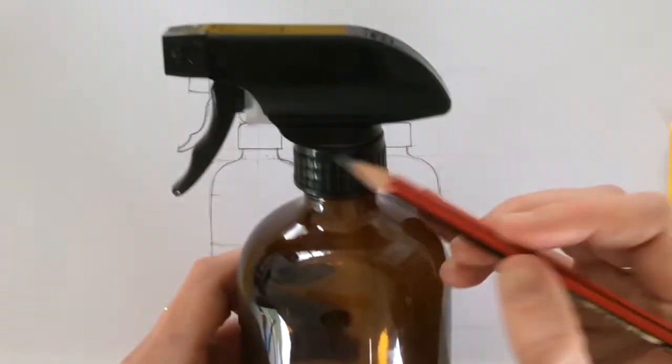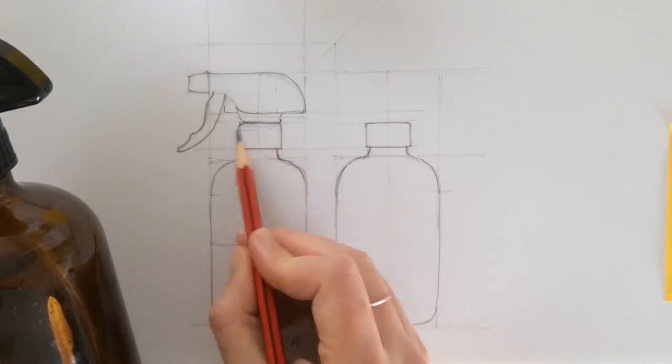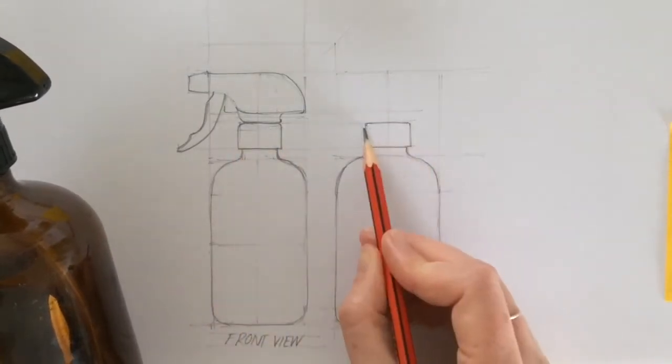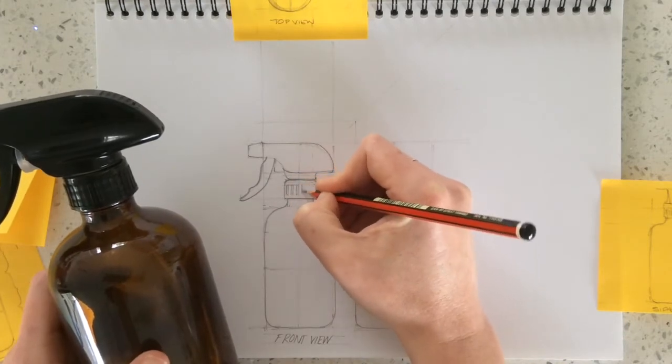These little ridges along the bottle cap, I really want to put in—they're an interesting feature, so I want to observe the proportions of them and add them along.